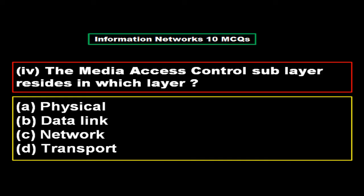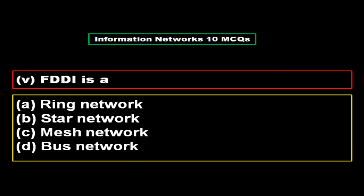The media access control sublayer resides in which layer? Option A physical, option B data link, option C network, option D transport. The right answer is option B, data link.